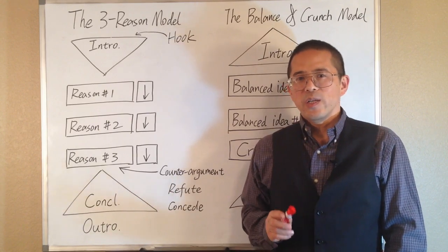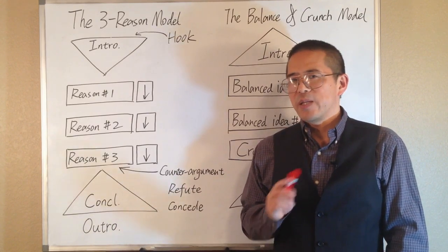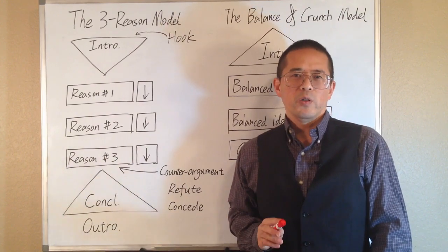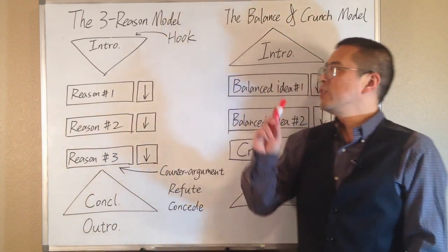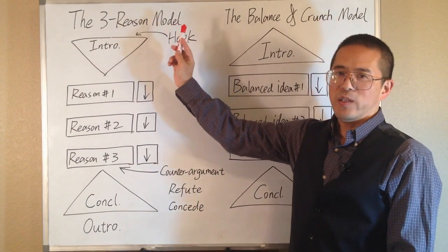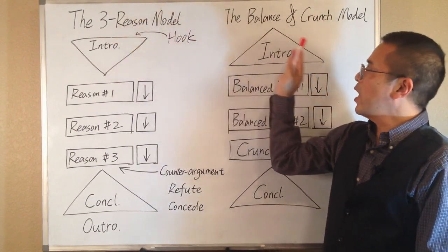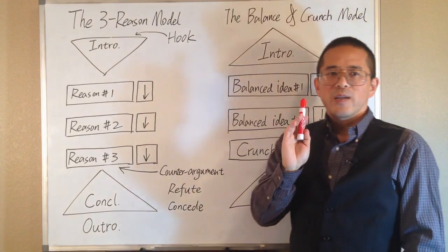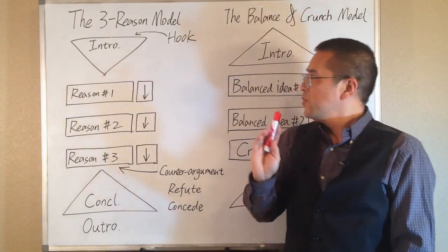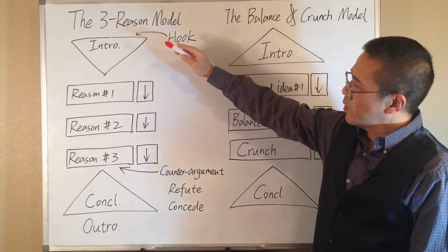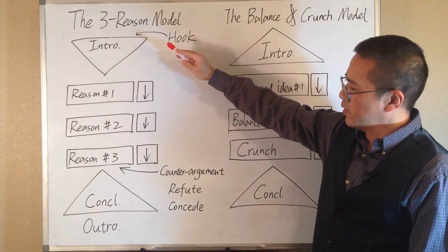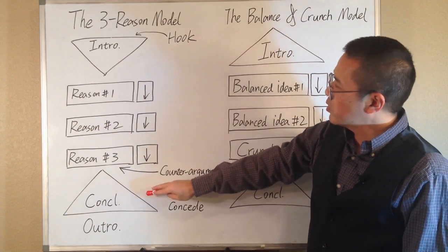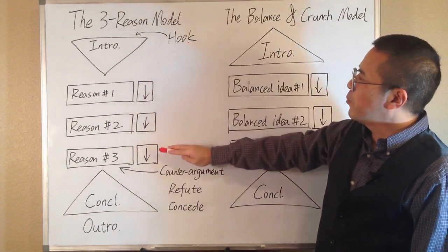The first writing model is a relatively simple and basic one. It is often called the 5-paragraph model, but I will call it the 3-reason model here in order to distinguish it from the other model we want to introduce today. Basically, this model recommends using 5 paragraphs in the essay, including 1 introduction paragraph, 1 conclusion paragraph, and 3 body paragraphs.